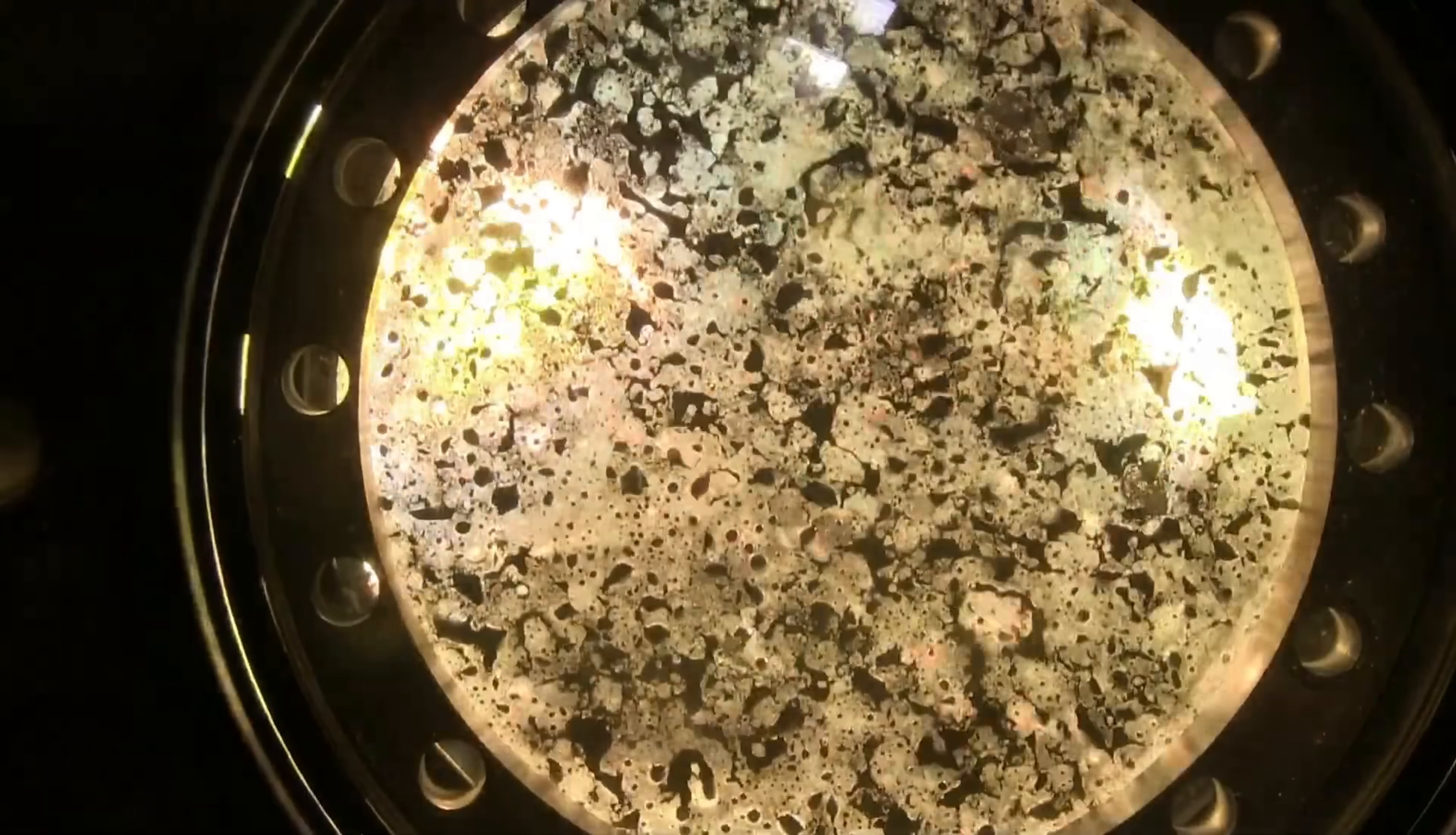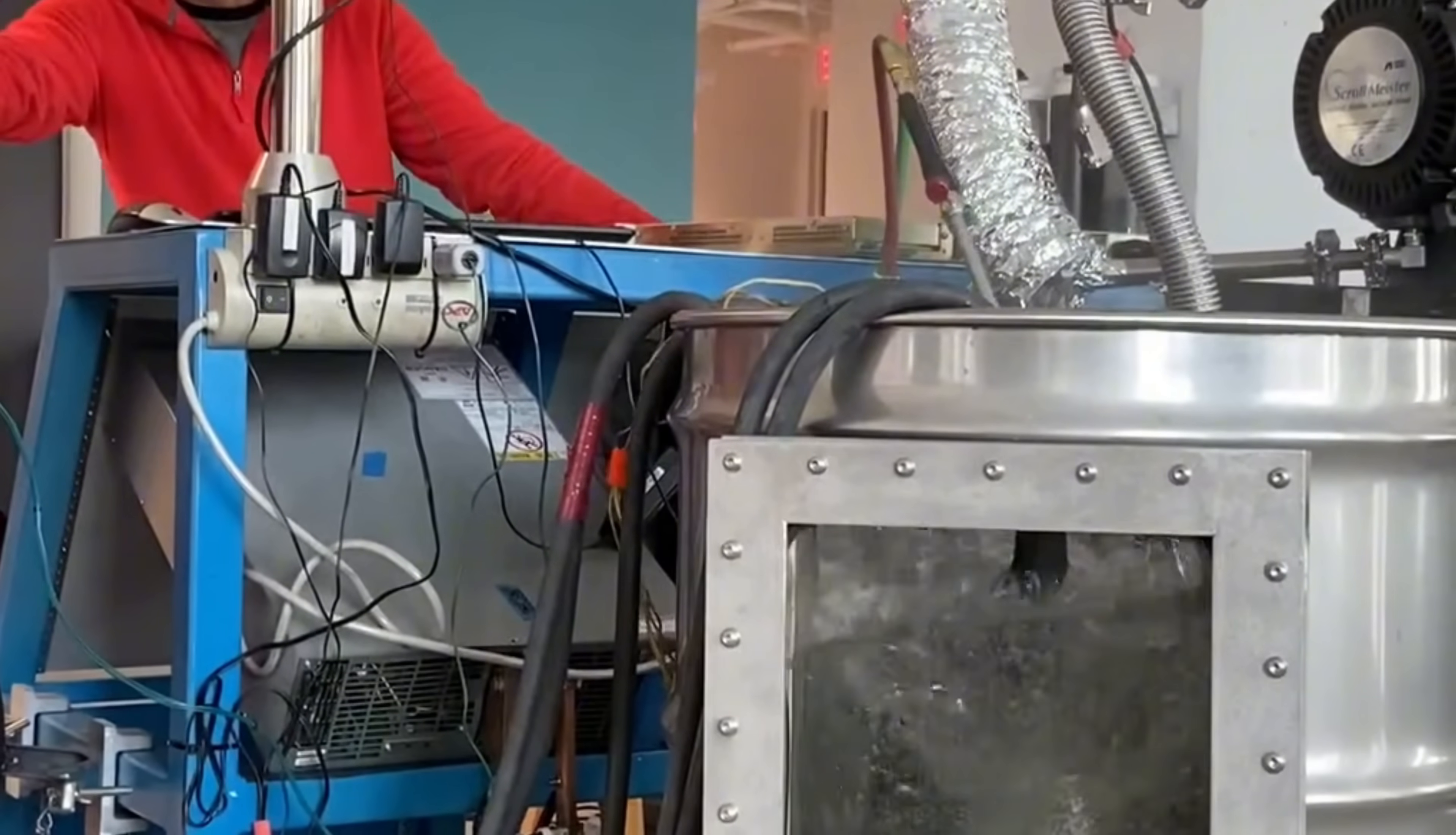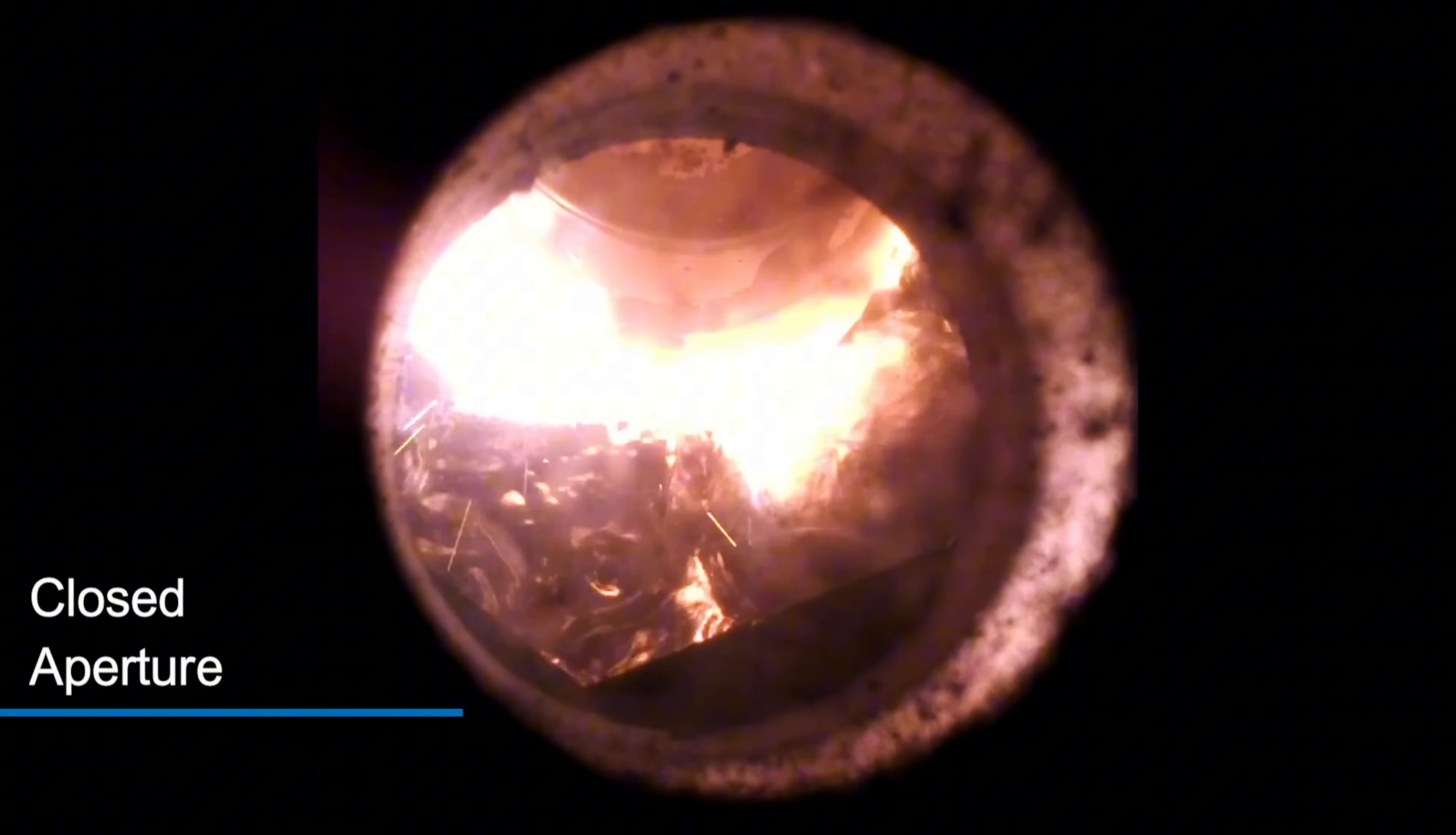The energy output of Brilliant Light Power is nothing short of staggering. According to Mills' calculations, a single gram of hydrogen fuel can produce the same amount of energy as 616 gallons of gasoline. This means that a small container of Brilliant Light Power fuel could power an entire home for weeks, or provide enough electricity to charge thousands of electric vehicles.